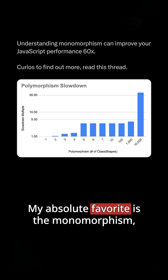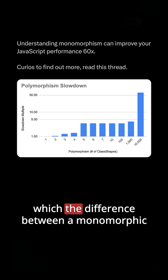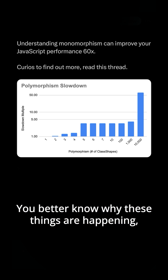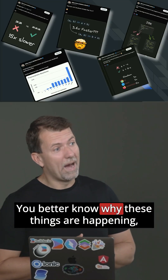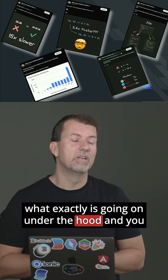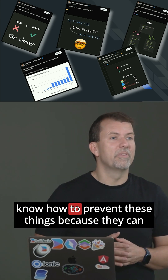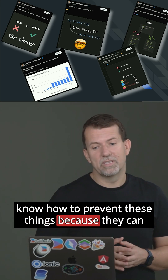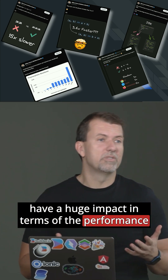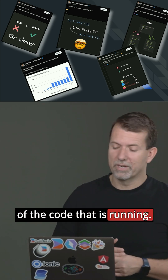My absolute favorite is monomorphism — the difference between a monomorphic read and a megamorphic read can be 60 times. You better know why these things are happening, what exactly is going on under the hood, and how to prevent these things, because they can have a huge impact on the performance of the code that is running.